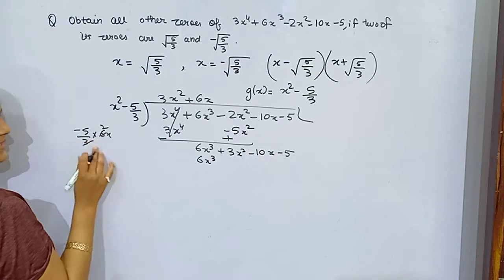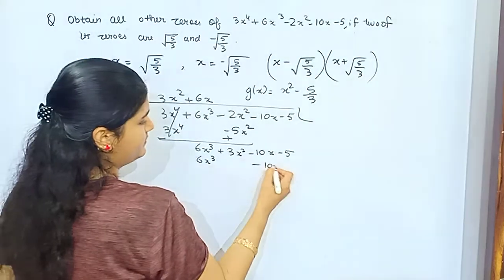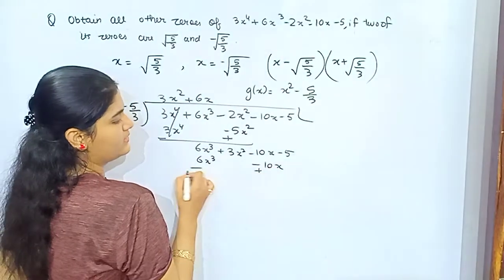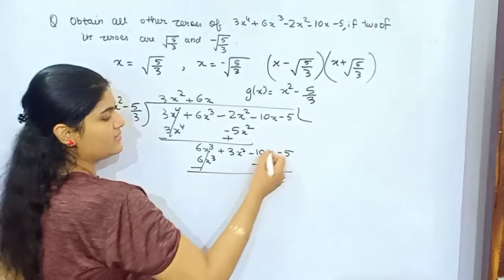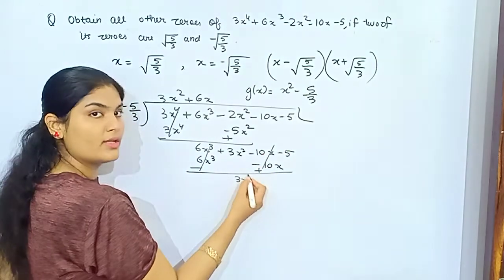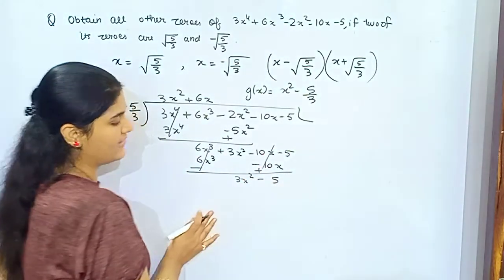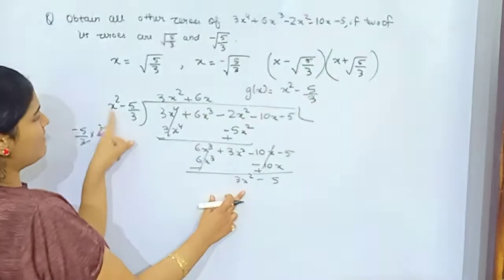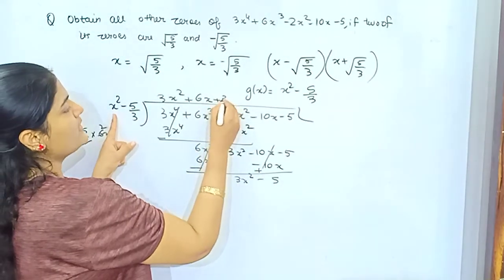If you multiply this with this, 3 times 2 is 6. See, you have -5/3 and this is 6x. 3 times 2 is this: -10x. So minus plus, this is cancelled. What you got: 3x - 5.